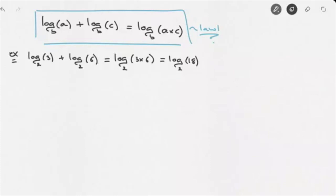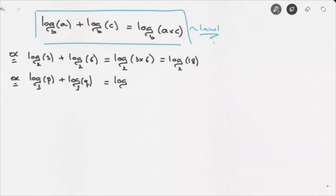Or let's say we're given another example, and we're asked to simplify log base 3 of P plus log base 3 of Q. We can't calculate P and Q since we don't know their values. Nevertheless, we can simplify this expression using this law, and write that this equals log base 3 of P times Q, which is just PQ.